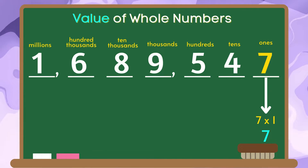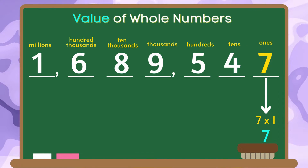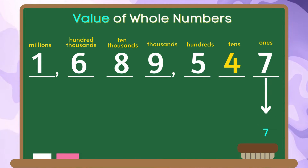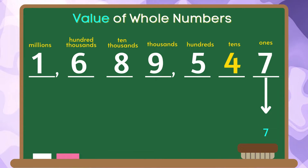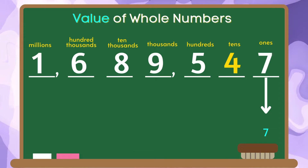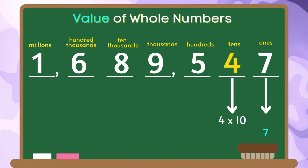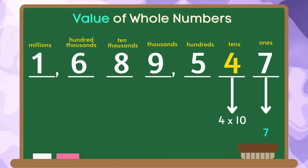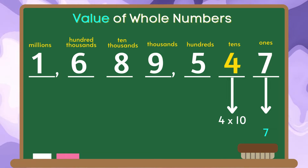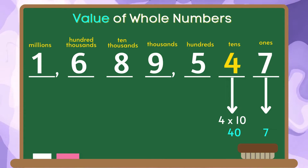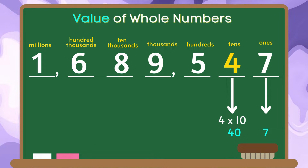The place value of the digit 4 in this number is tens. We are going to multiply 4 by 10. 4 times 10 is equal to 40. Therefore, the value of the digit 4 is 40.